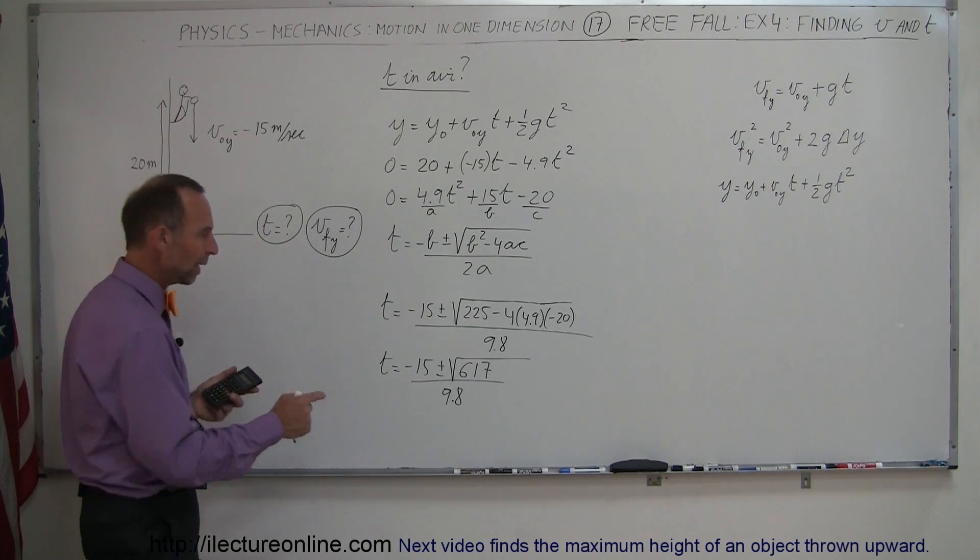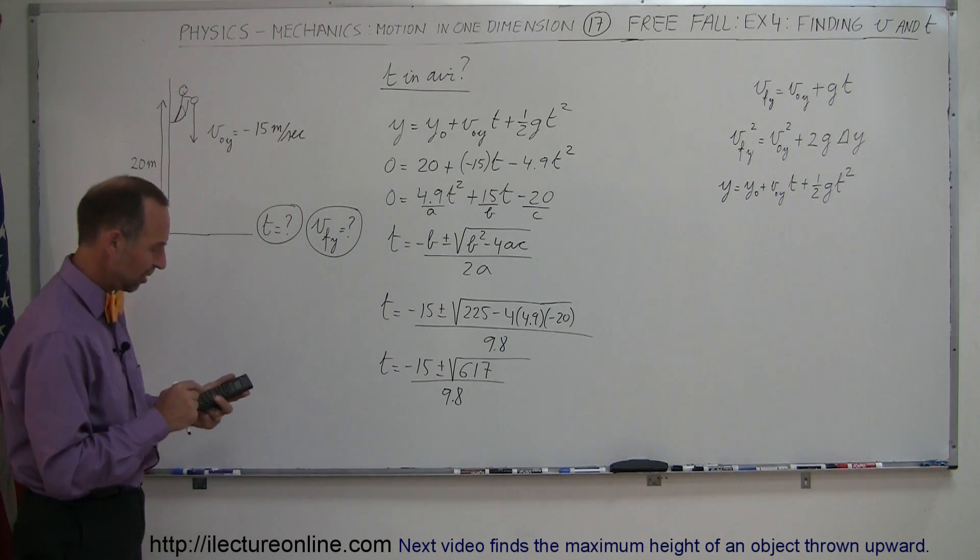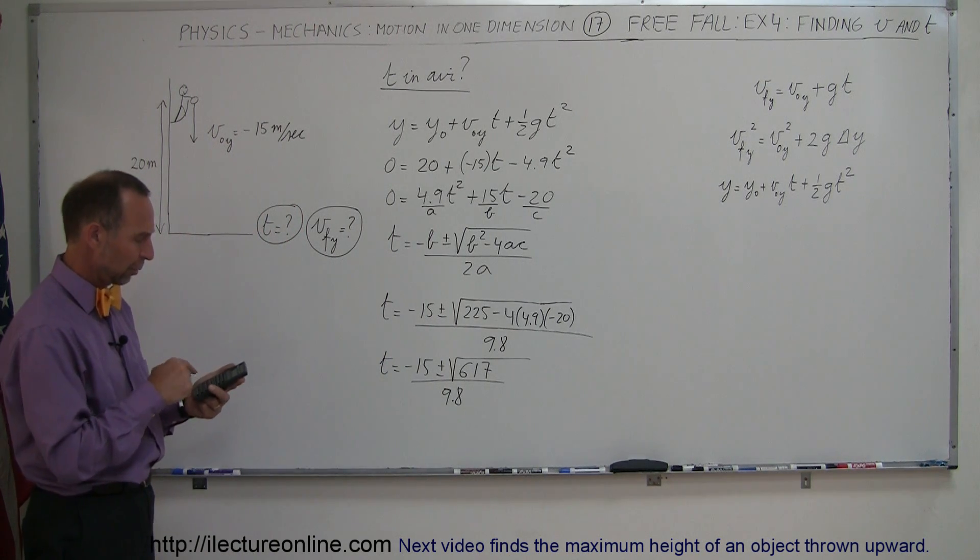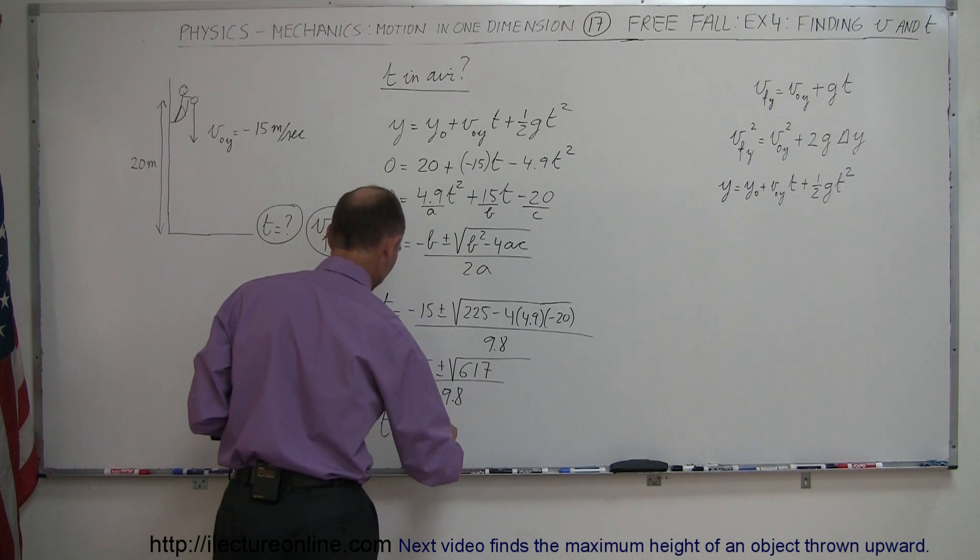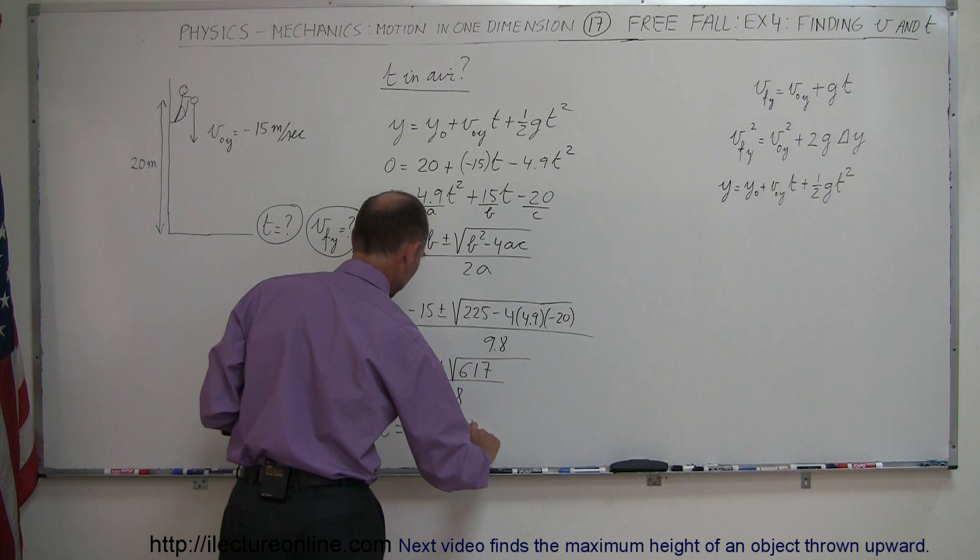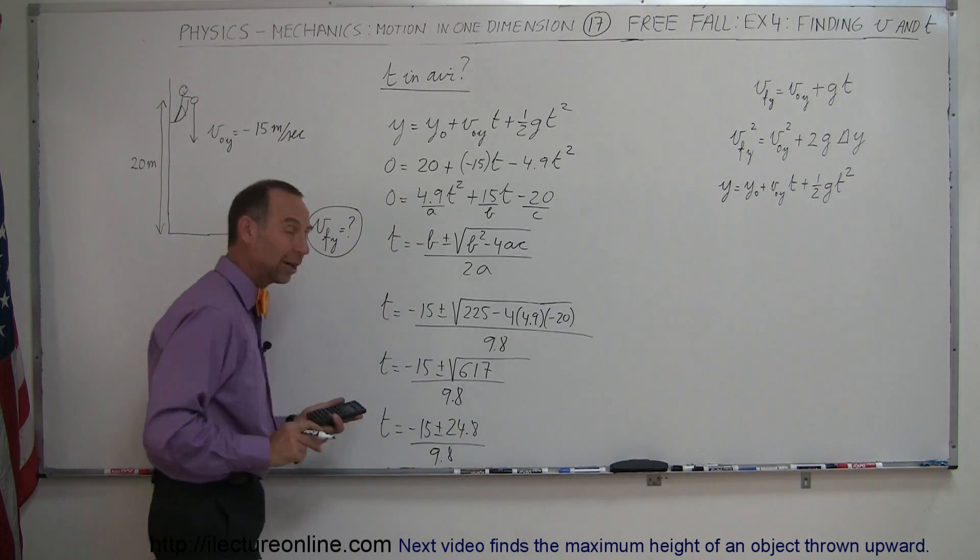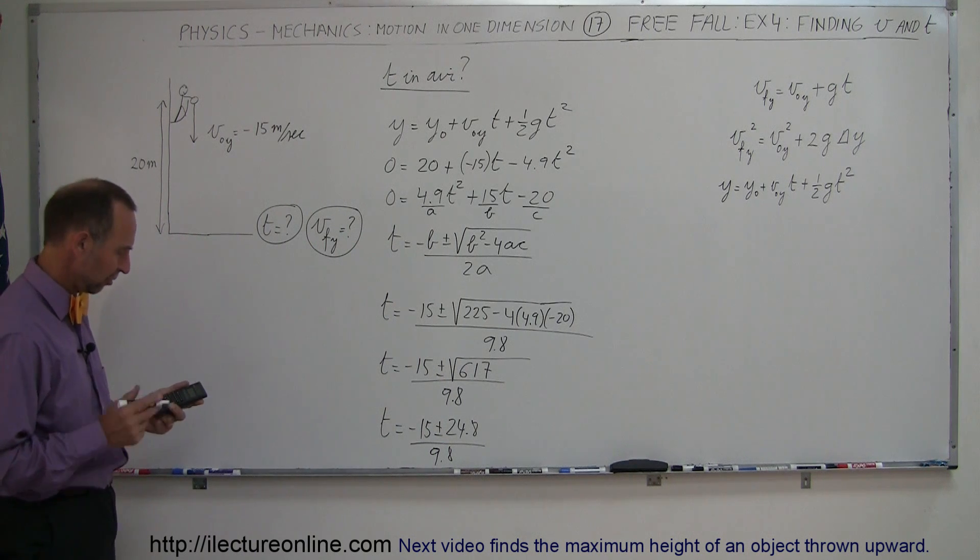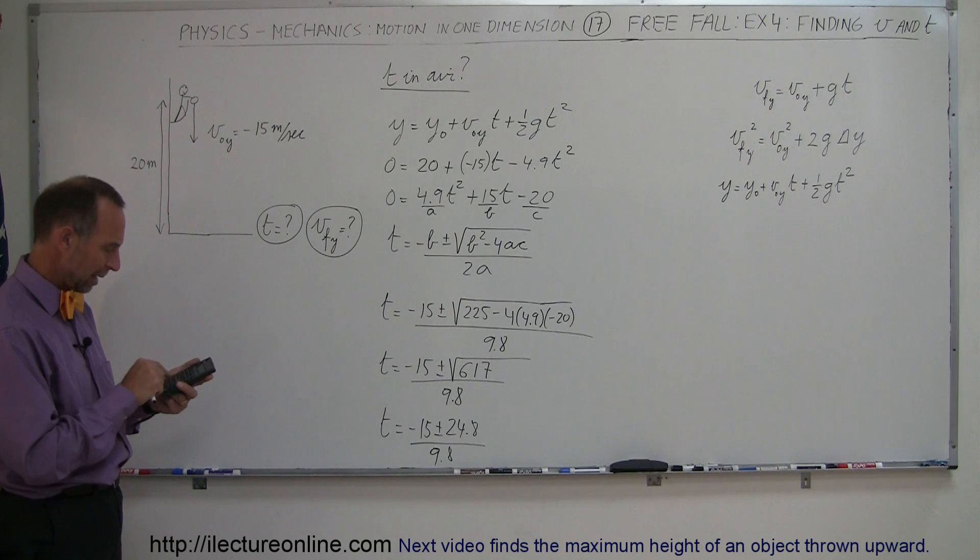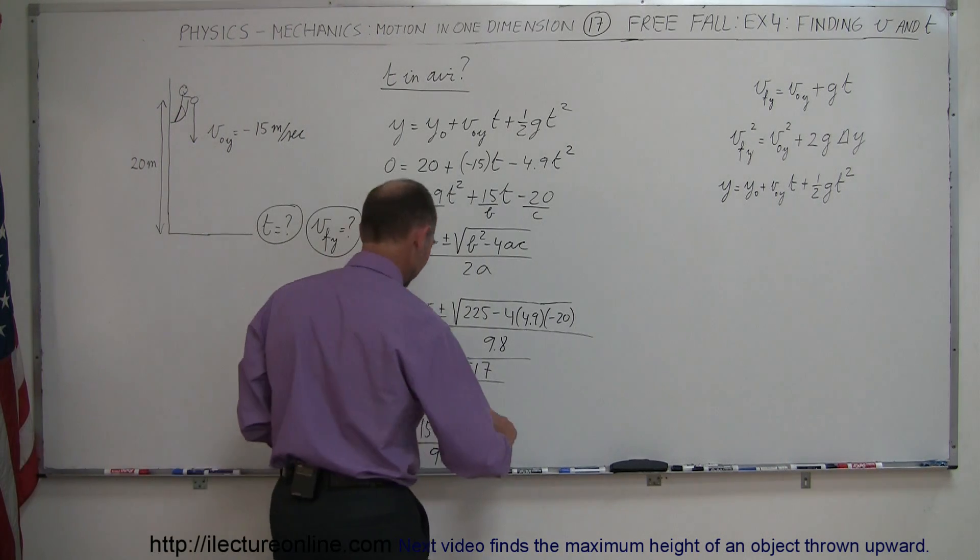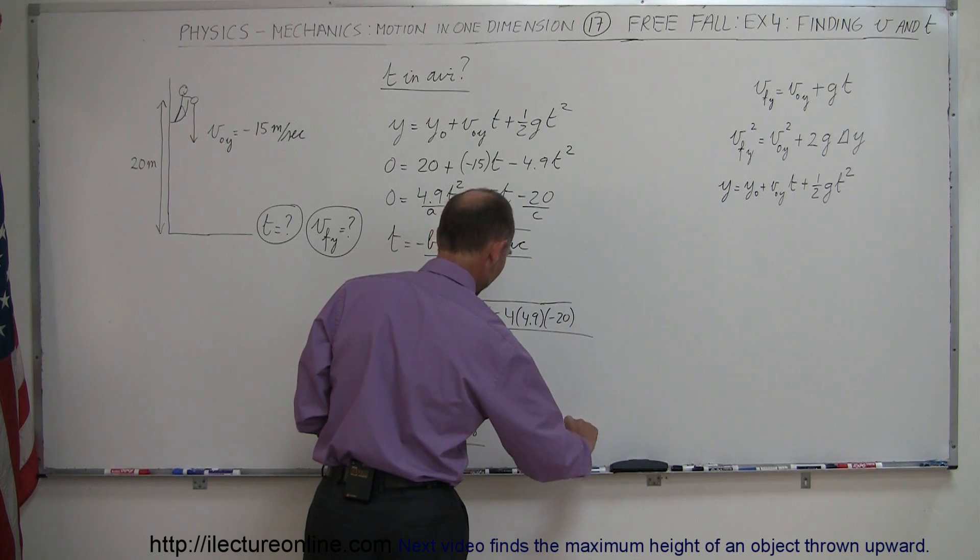So we're going to get, again, two answers, because the plus and minus right here, so let's start with the plus square root of 617 first, which is 24.8, so let me write that down. So t is equal to minus 15 plus or minus 24.8 divided by 9.8. So here it's easier to see that you're going to get a positive and negative answer. So let's start with the positive answer first, minus 15 divided by 9.8 equals, and we get time is equal to 1.004 seconds,